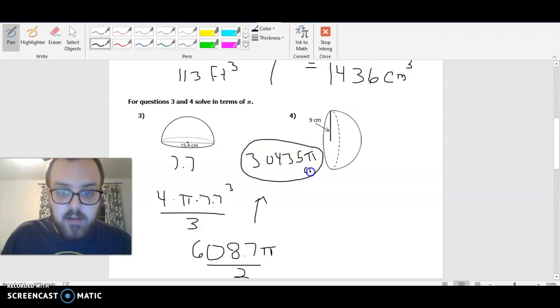The actual volume I'm going to get is 304.35π. And that would be in centimeters cubed.